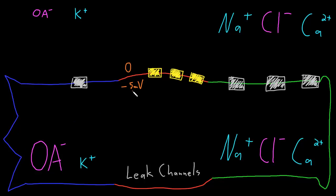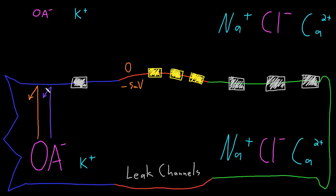Even with a small membrane potential, there will be an electrical force acting on the organic anions because they will be attracted to the more positively charged outside of the membrane, trying to drive organic anions out of the neuron. But they won't be able to leave because the membrane is highly impermeable to organic anions. The same is true for the diffusion force caused by their higher concentration inside. They're trapped inside the neuron, so no further changes will happen to the membrane potential at this imaginary step.